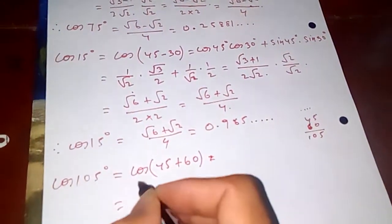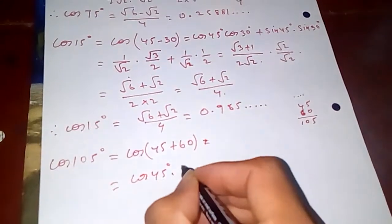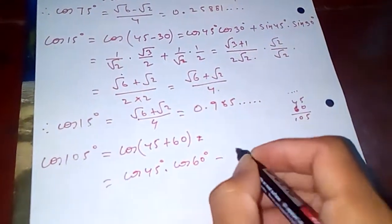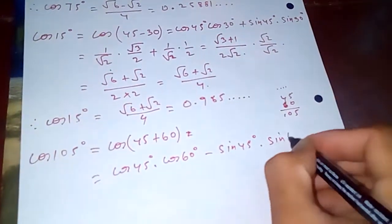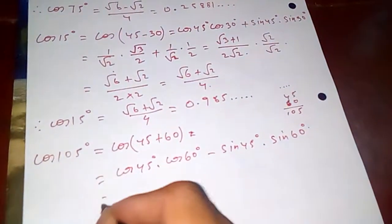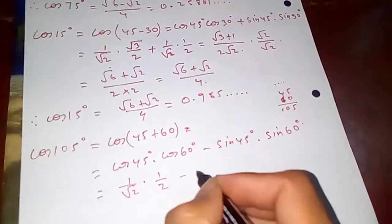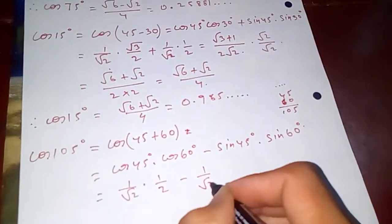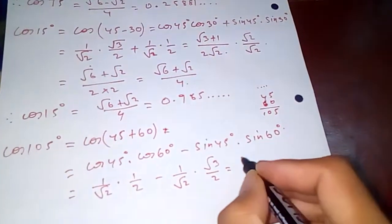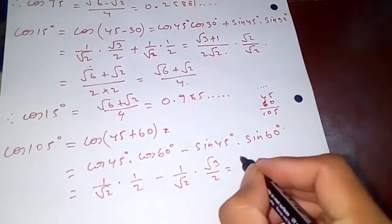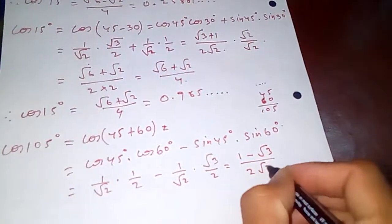Applying the formula: cos 45 cos 60 minus sin 45 sin 60. Cos 45 is 1/√2, cos 60 is 1/2, minus 1/√2 times √3/2. This simplifies to (1 − √3) over 2√2.